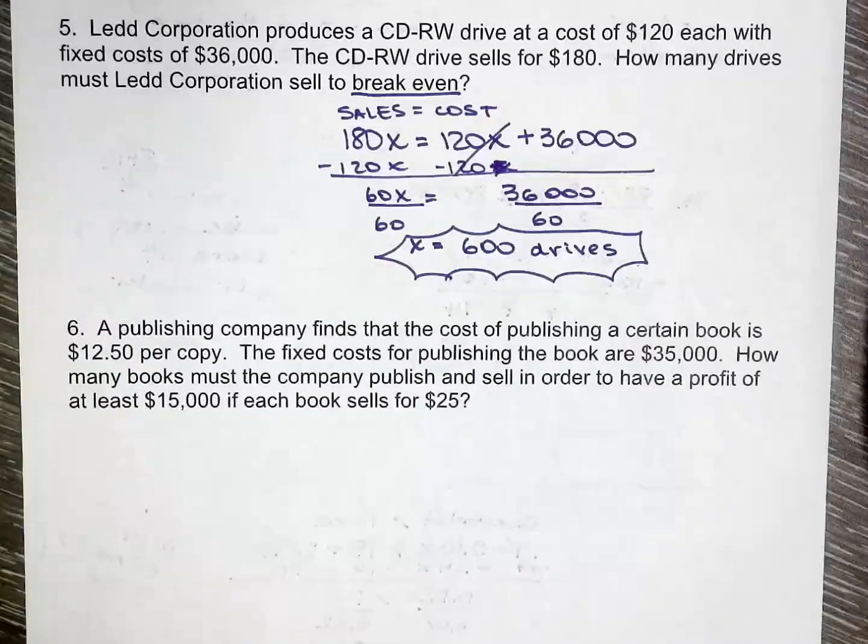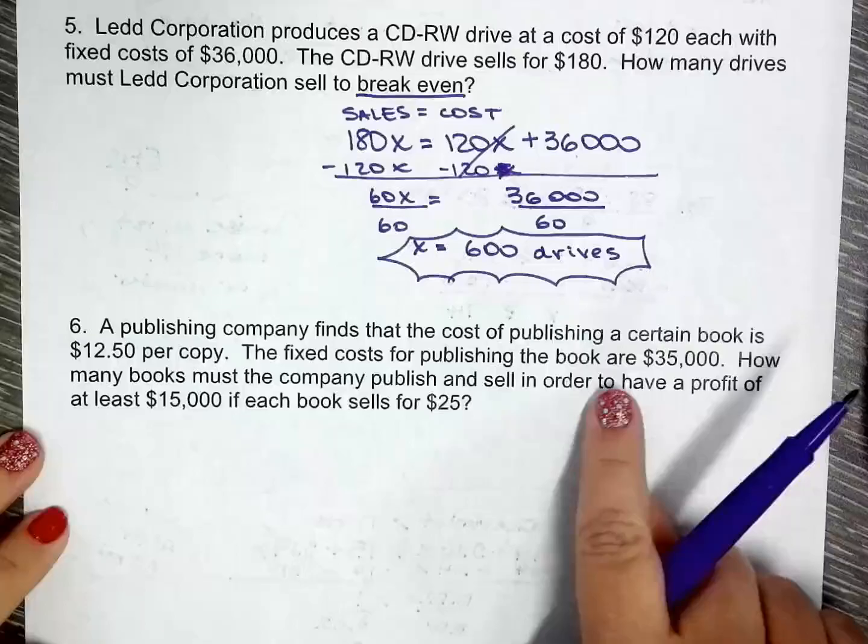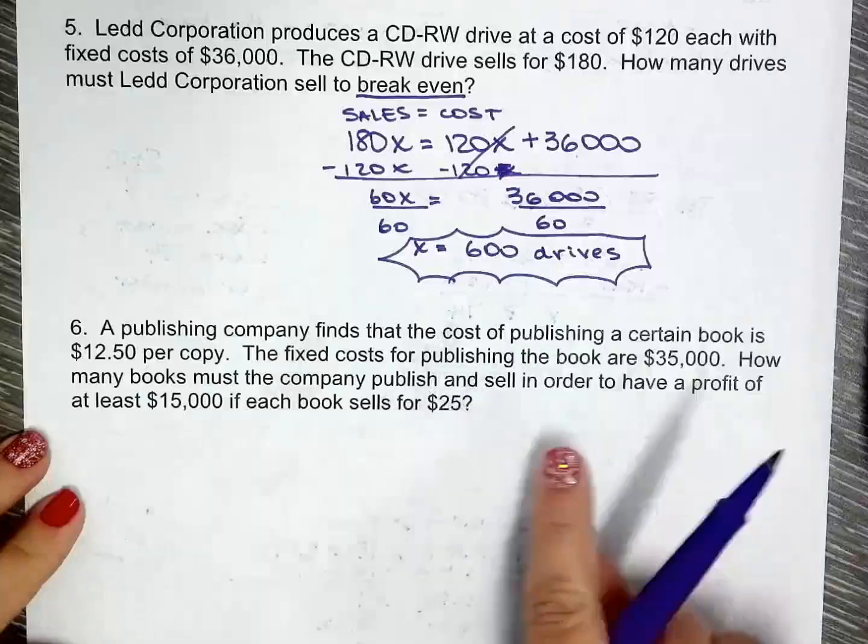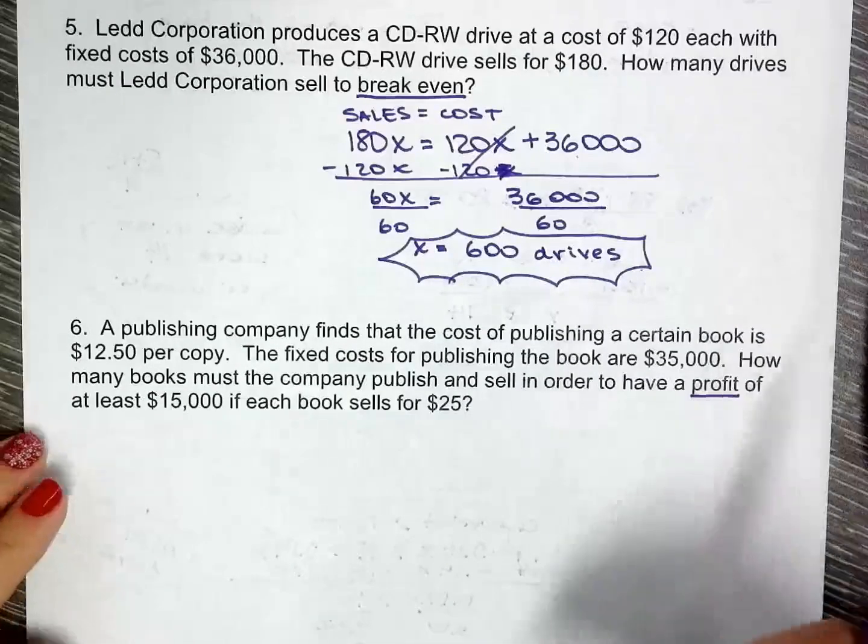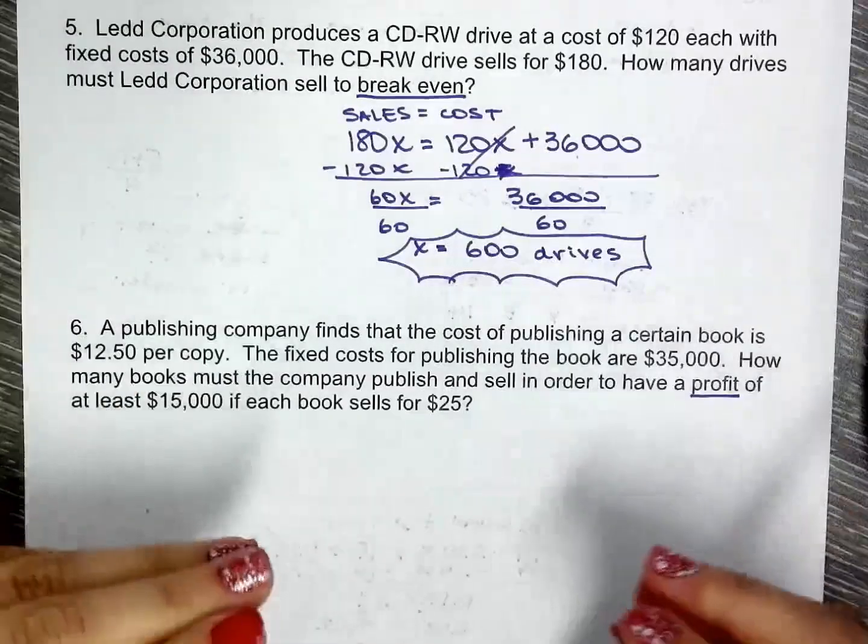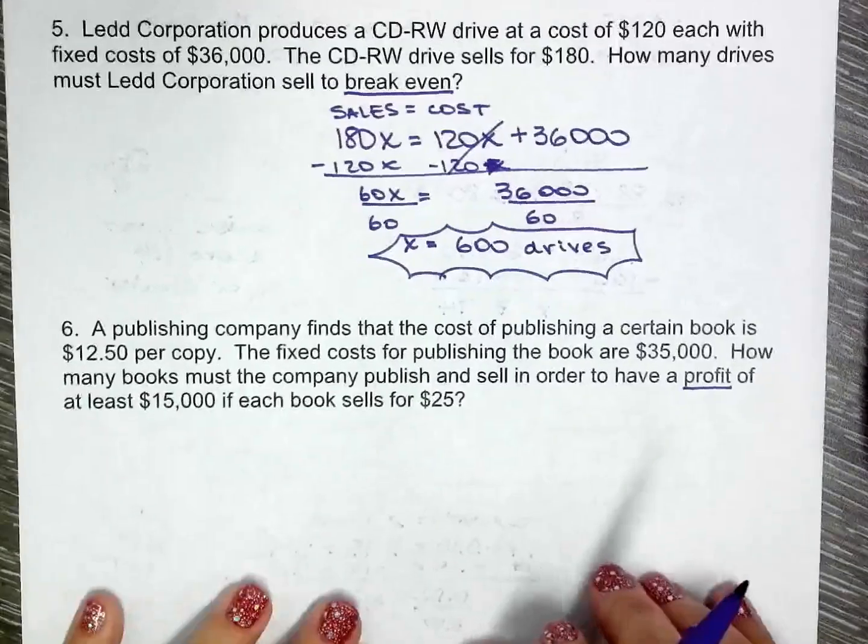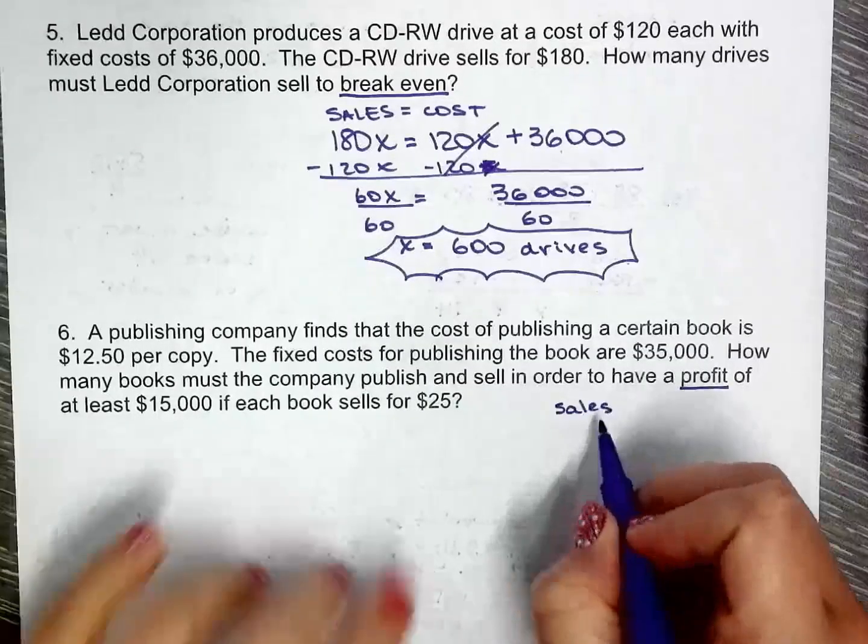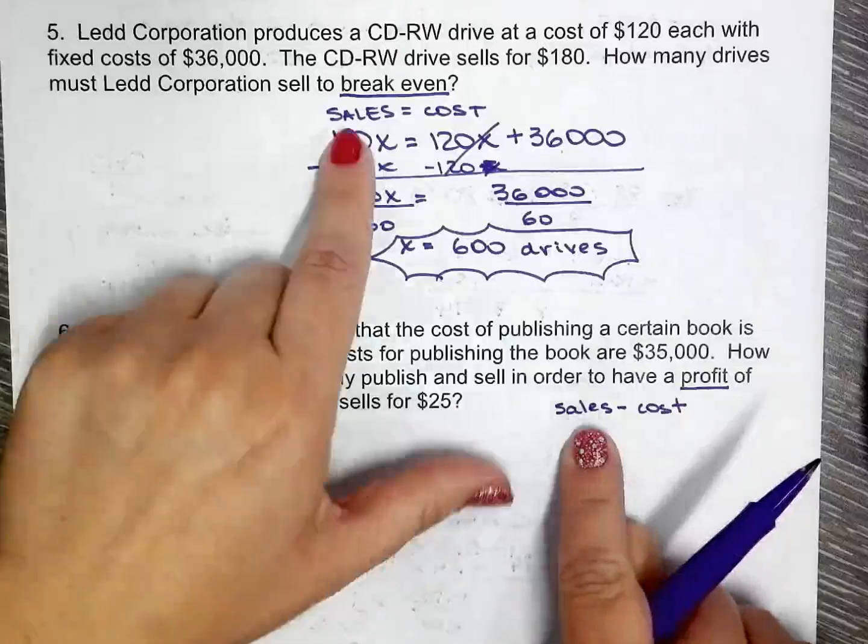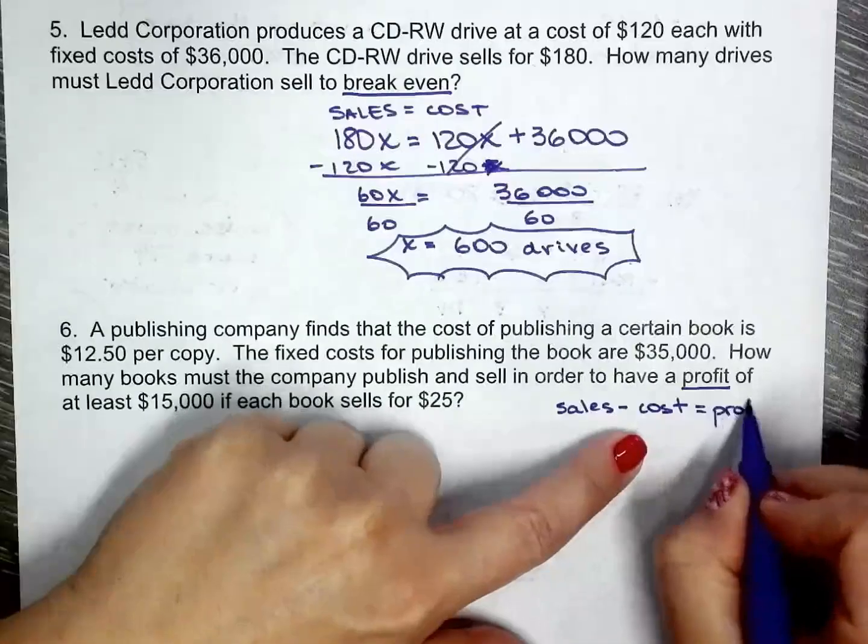Last one, a publishing company finds that the cost of publishing a certain book is $12.50 per copy, so per book. The fixed cost of publishing the book are $35,000. How many books do they have to sell in order to make a profit? Profit is what you make more than after you break even, so that's what goes in your pocket. After you pay all your bills, that's your profit of at least $15,000 if each book sells for $25. So just a little side note right here. So sales, I just talked about it quickly. So if you're not listening, you won't know where this came from. So profit is after you pay the cost. So it's the sales and then you pay the costs, it's what goes in your pocket, so that's your profit.